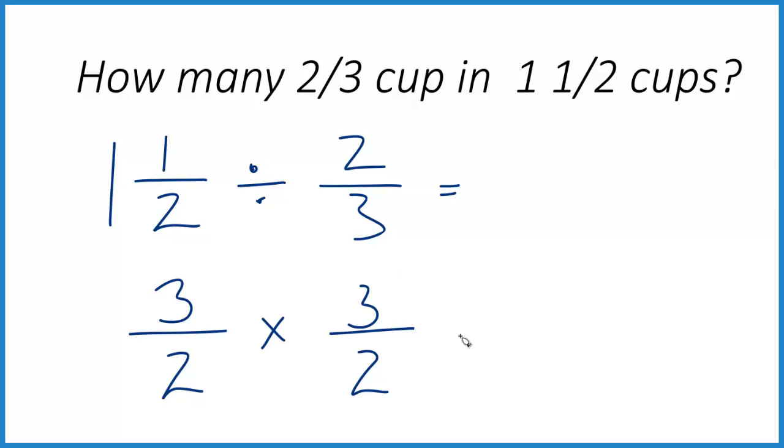And now we just multiply. So it's kind of nice. We just say three times three, that's nine. Two times two is four, and we end up with nine-fourths. So there are nine-fourths of these two-third cup measures in one and a half cups.